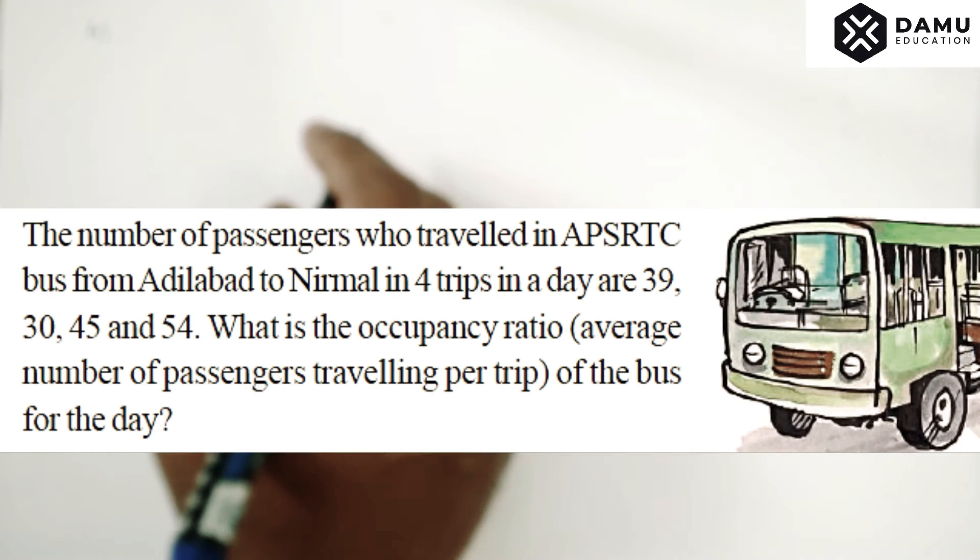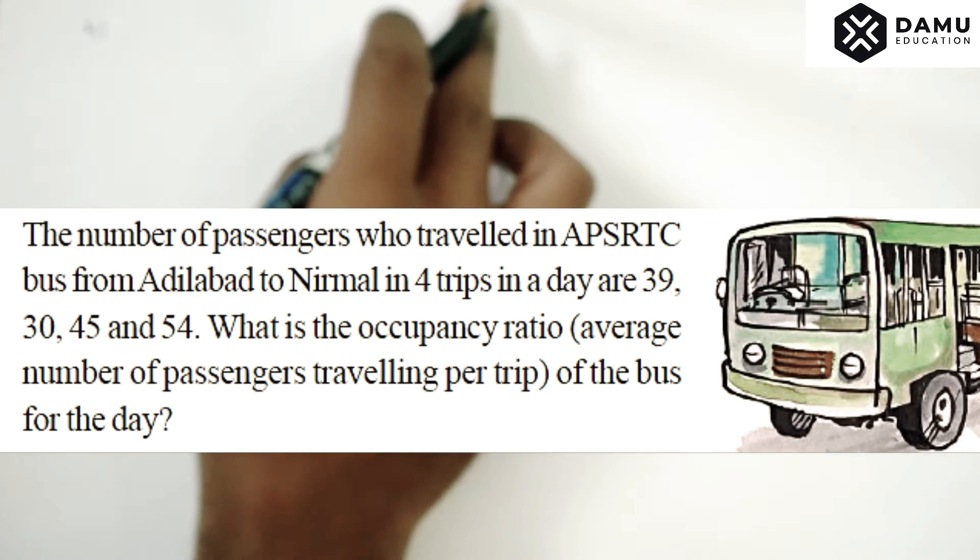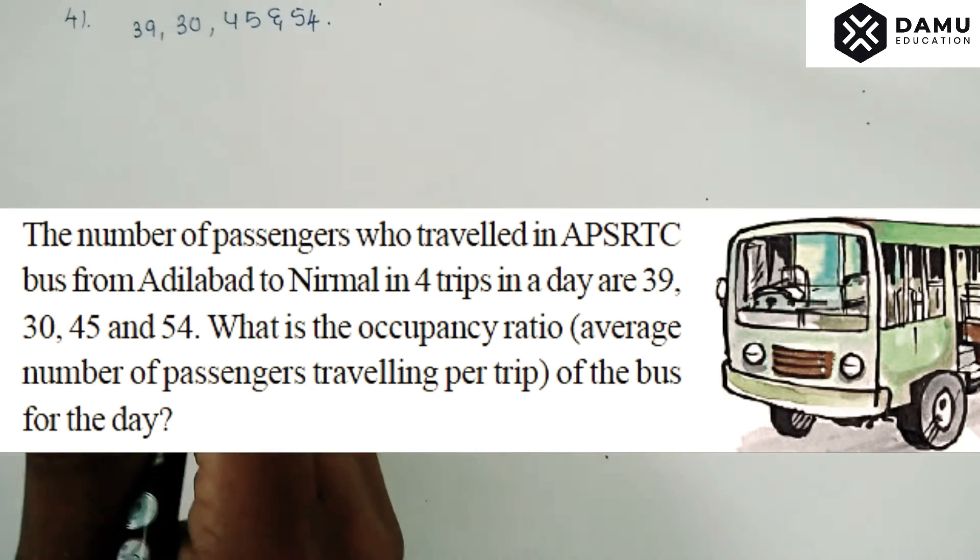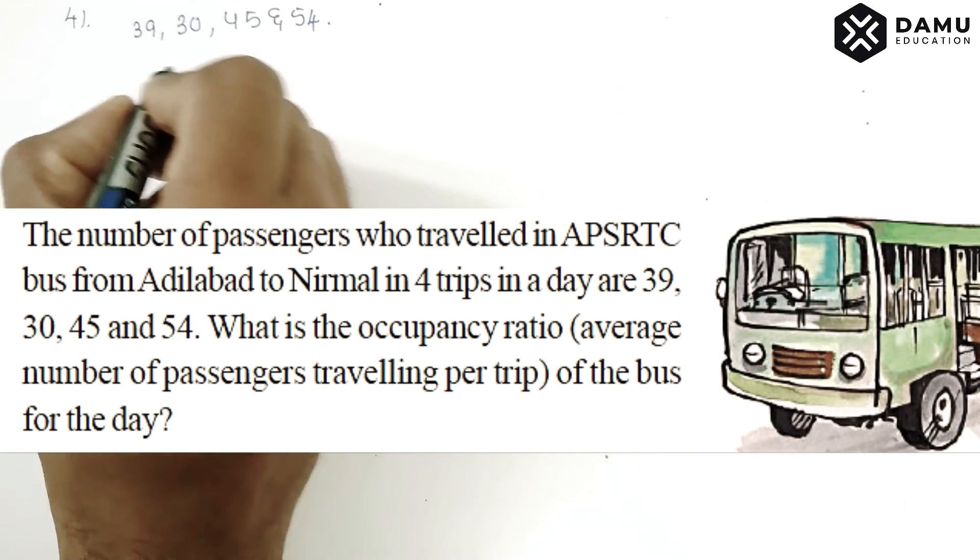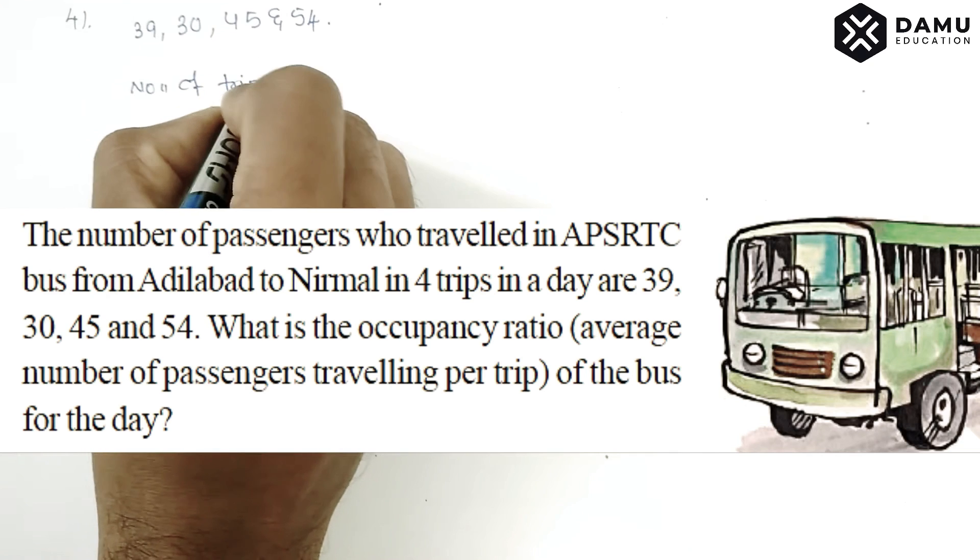What is the occupancy ratio, the average number of passengers traveling per trip of the bus for the day? So number of passengers traveled - how many passengers traveled? Number of trips will be four trips.